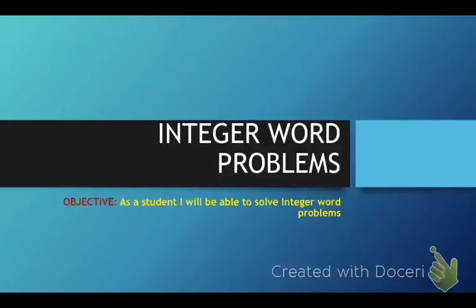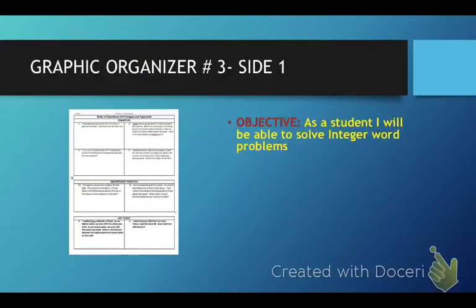Your objective for this video is, as a student, you should be able to solve integer word problems. I will let you know that most of this video is going to concern itself with absolute value. Remember, absolute value is the distance a point is from the origin, and the origin is 0. So it is the distance a number is from 0, or the distance a point is from 0.